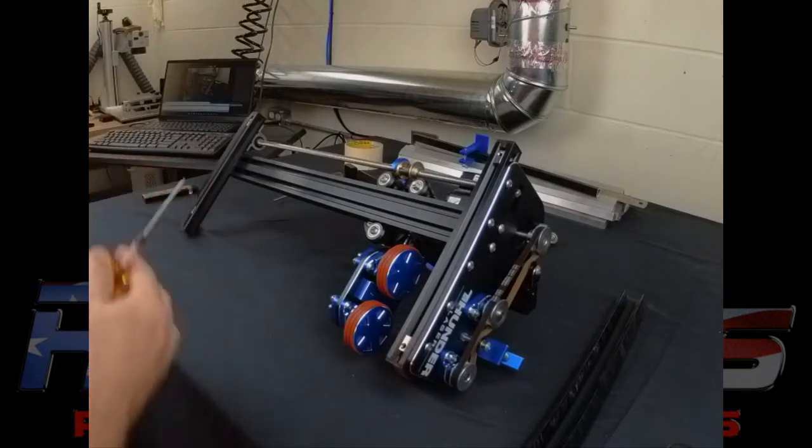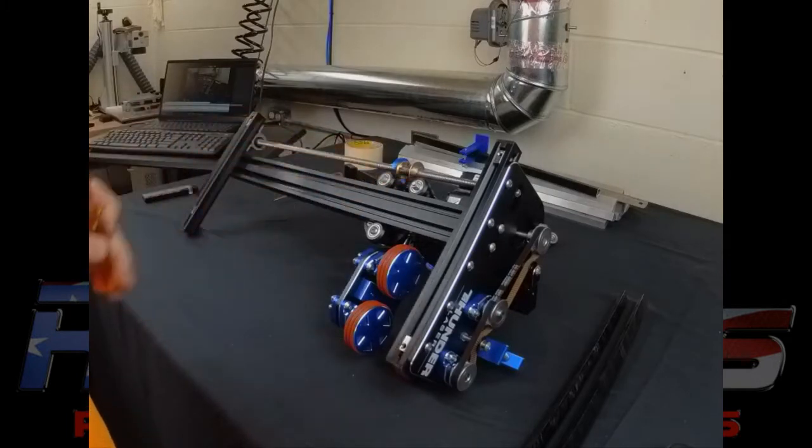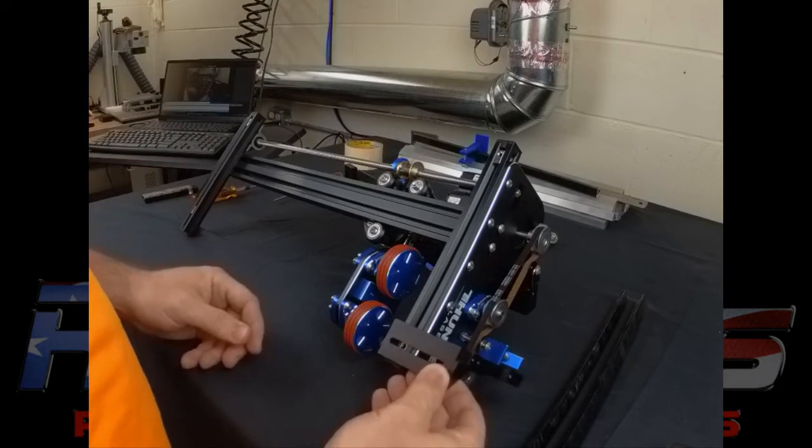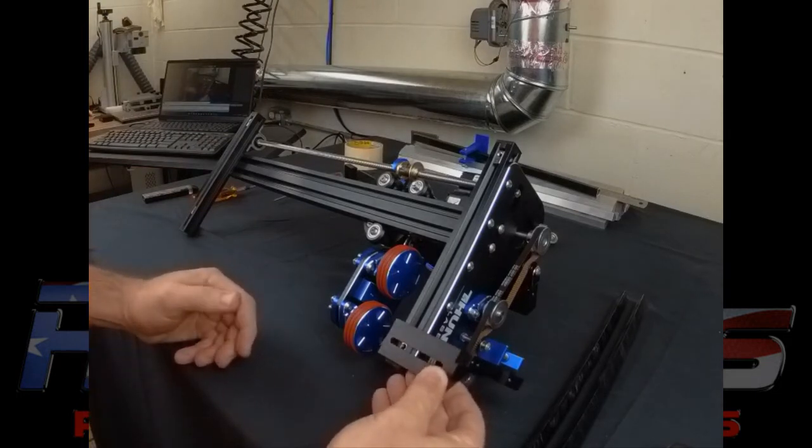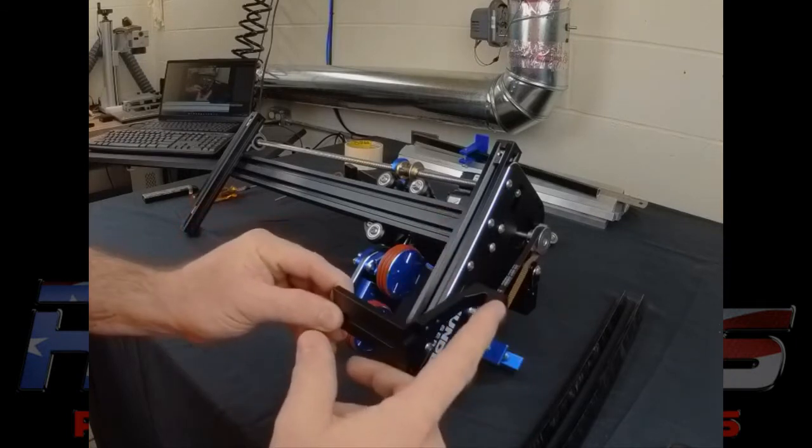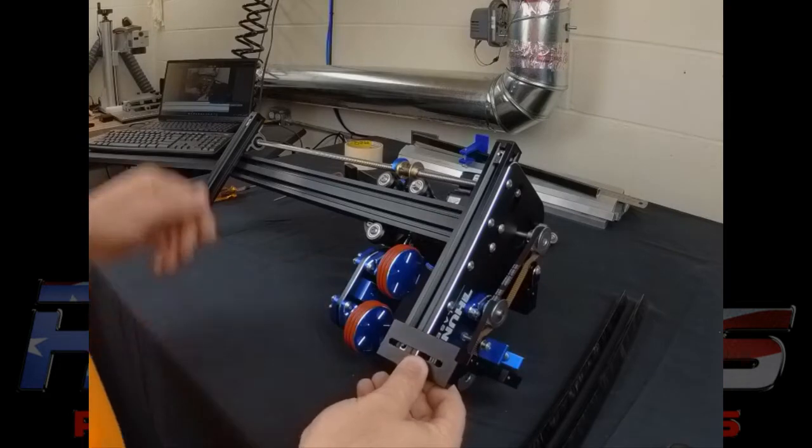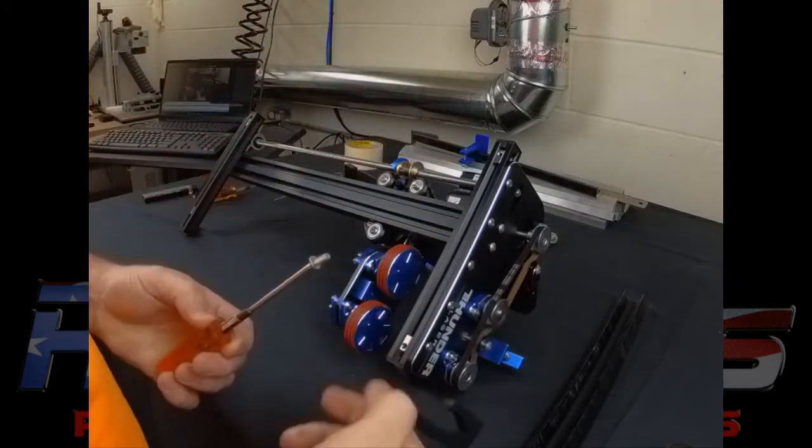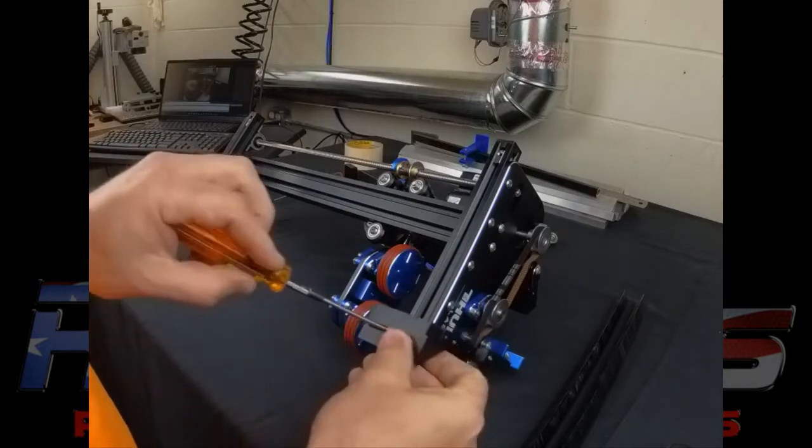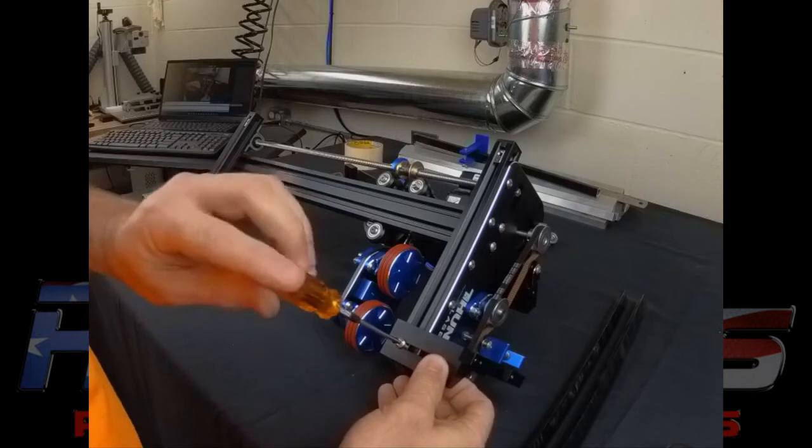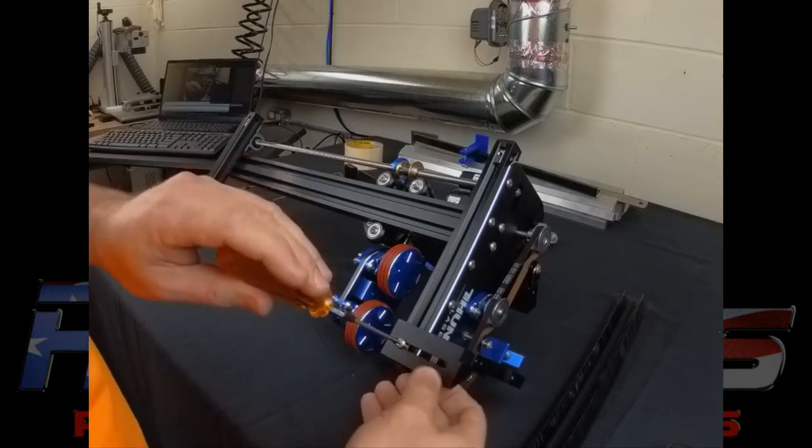Alright, now after you have all four of them in, you'll go ahead and take your two back brackets for your motor and those are going to go in just like this with the blade hanging portion out to the back. You'll take the provided M5 screws. For now you just want to leave them kind of loose because you're going to need to adjust them.